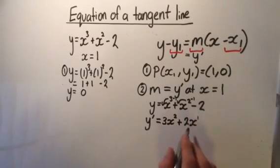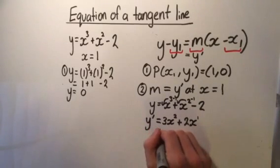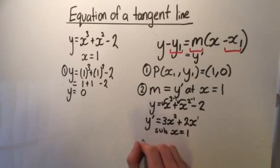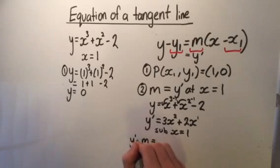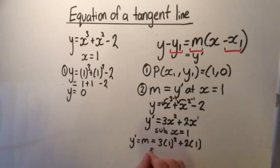Okay. So now we've got our derivative function. We need to sub in the x equals 1. So I substitute x equals 1 to find what the gradient is. So instead of y dash, I'm just going to write m. Because I know that y dash is the same as m at this point. So the gradient at x equals 1 is going to be 3 times 1 squared plus 2 times 1, which equals 3 plus 2, which equals 5. Great. So now I know that our gradient equals 5.